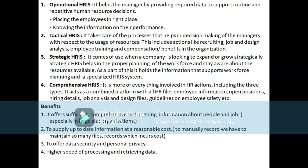Placing persons in a job means we have to see the eligibility of the person — is the person right for that particular place? For this, we need certain information about that particular person: the performance levels or the capability levels. Depending upon that information only, we can place the person in a particular place. This is known as operational HRIS, which is purely related to the hiring of an employee, career planning, or competency of an employee.